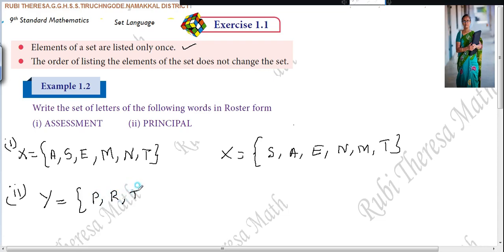P, R, I, N. C. I, is it necessary to write one more time? No, only listed only once. I you wrote already here. You should not write it again. Next one, what? A. Next, L.